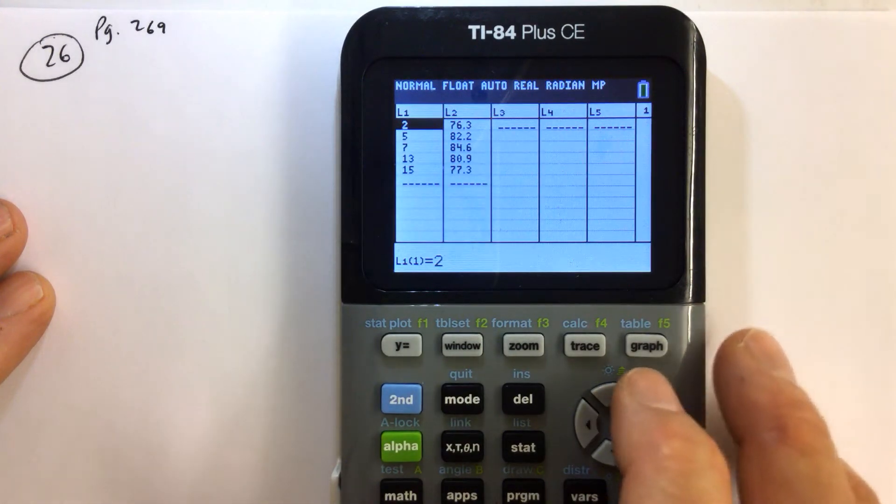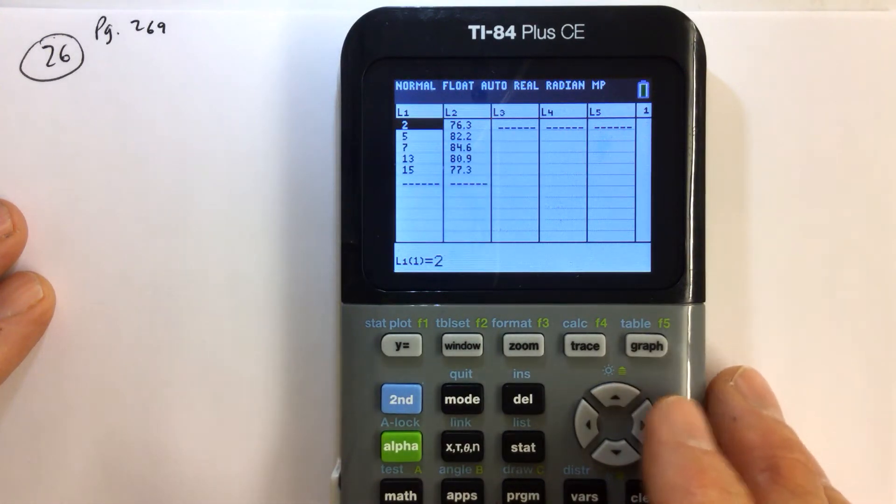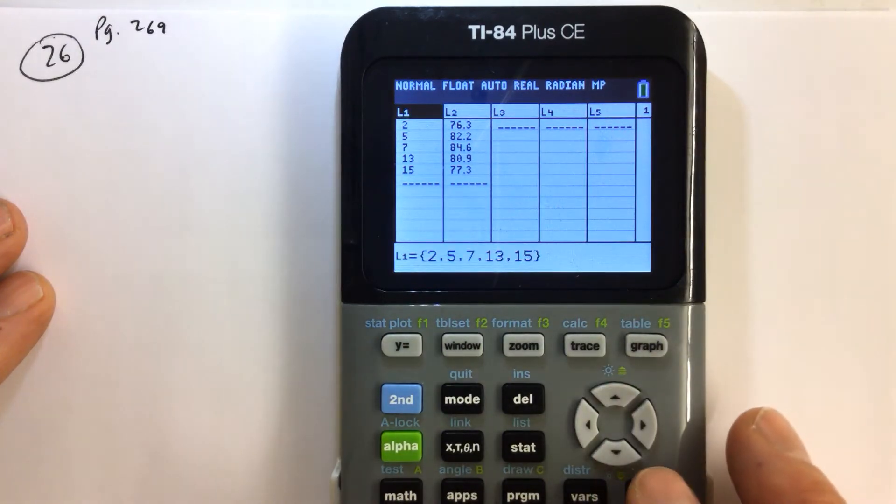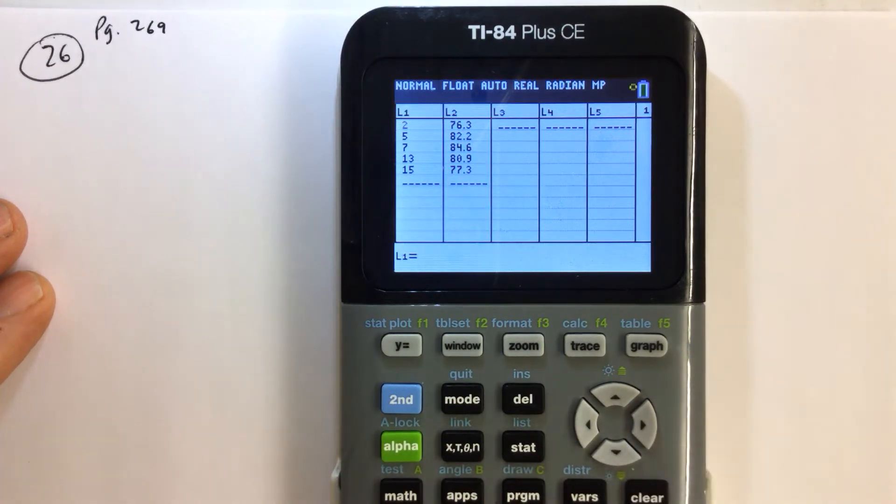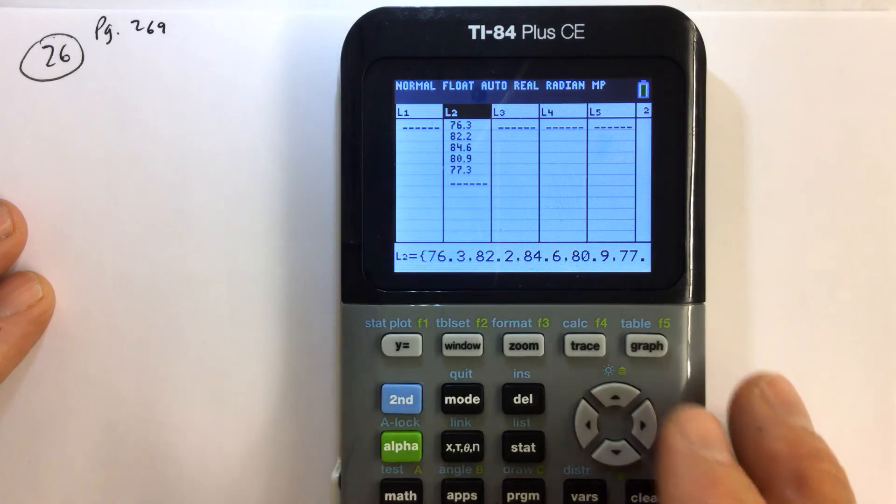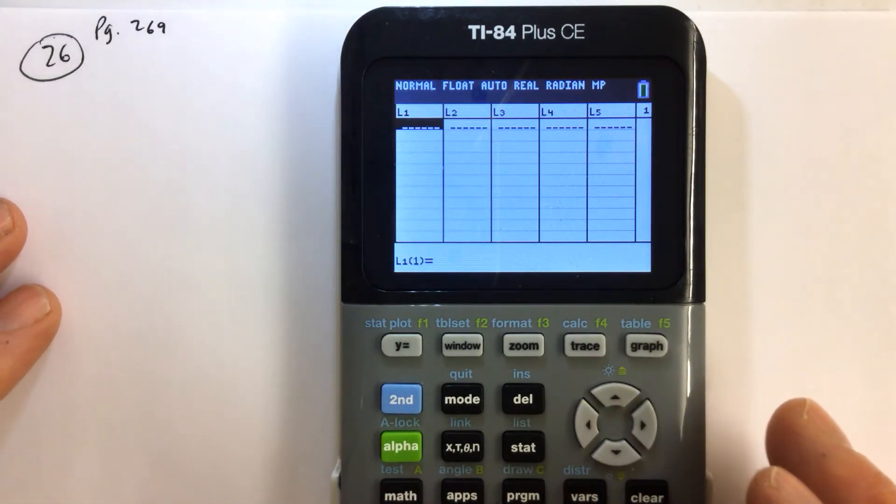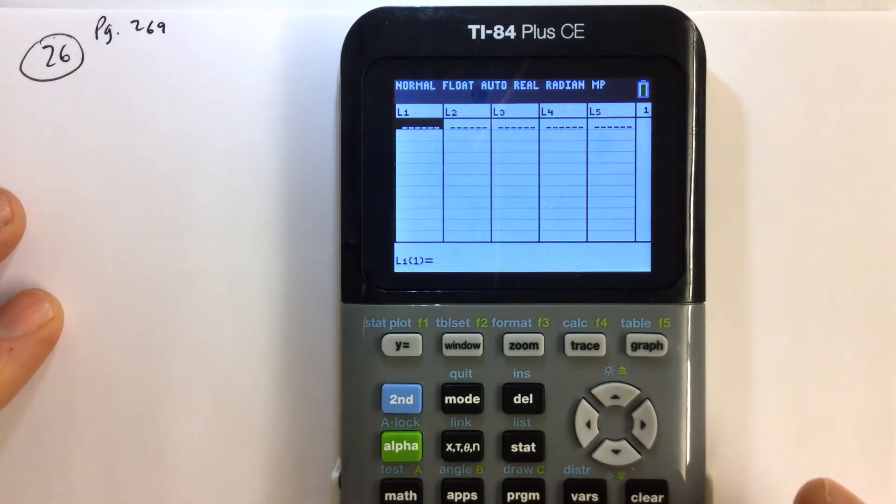We want to clear our tables as well. So we're going to move our cursor to list 1 and hit the up arrow to highlight the name of list 1, which is L1, clear, enter. So we're clearing our lists. Highlight L2, hit clear, enter. And now we've made room for inputting our data from the table.